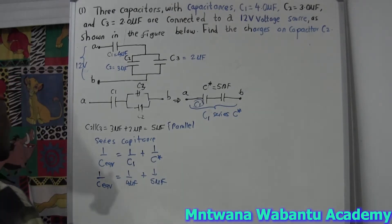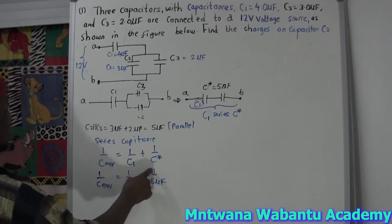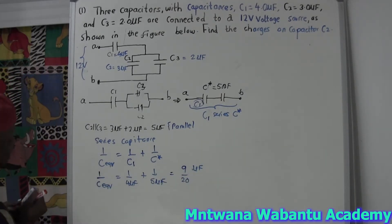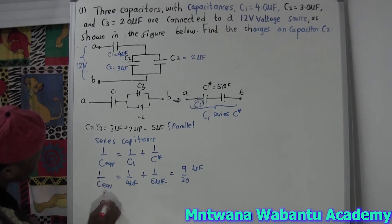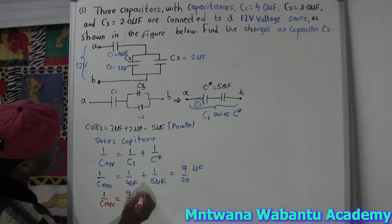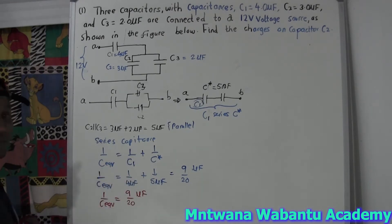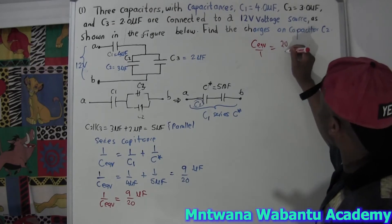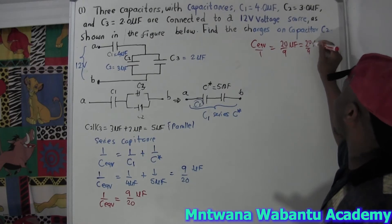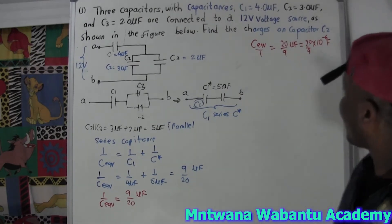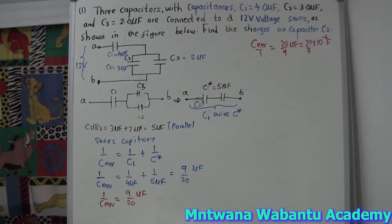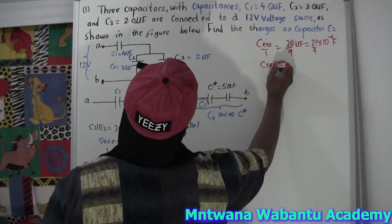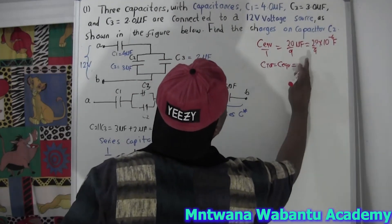Calculating: one-quarter plus one-fifth gives us 9 over 20. So one over C_total equals 9 over 20. Flipping both sides, C_total equals 20 over 9 microfarad. Using a calculator, that gives us approximately 2.22 microfarad.